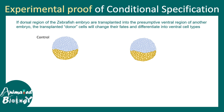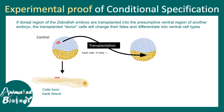This kind of conditional fate specification was nicely demonstrated in a zebrafish embryo with an elegant transplantation experiment in the early 1970s. In the control situation, this embryo gives rise to a normal zebrafish larva. Any cell present in the dorsal region — the blue region — would eventually become cells of the back, and any cells in the yellow region would become cells of the belly or ventral region.